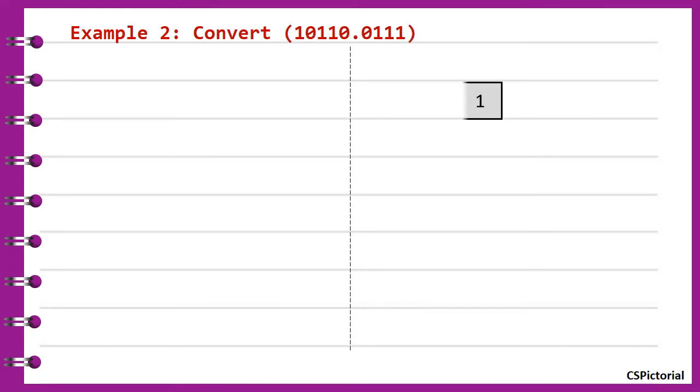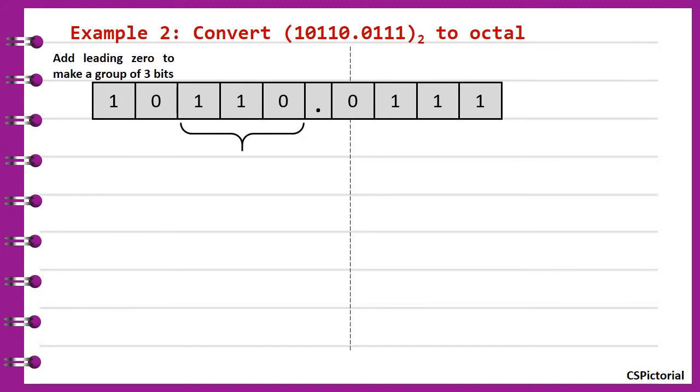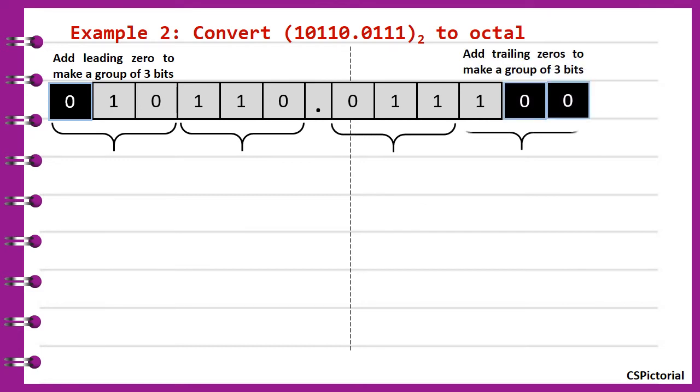This is another example with fractional value. Group the bits from left to right for the fractional part and add trailing zeros if required.